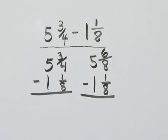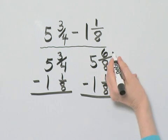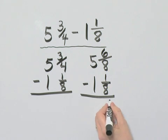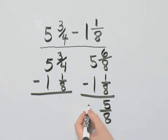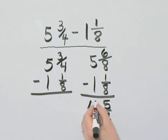And there we can go ahead and subtract 6 over 8 minus 1 over 8. Since the denominators are the same, that's 6 minus 1 or 5 over 8, and then 5 minus 1 is 4.